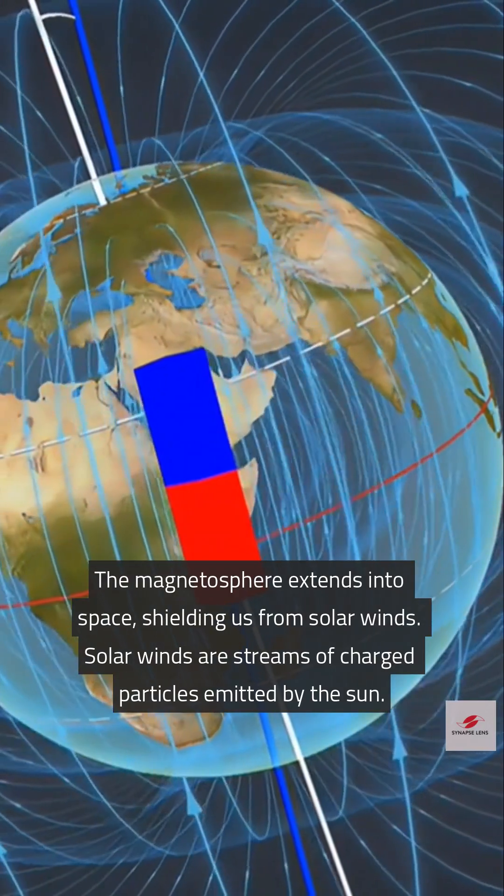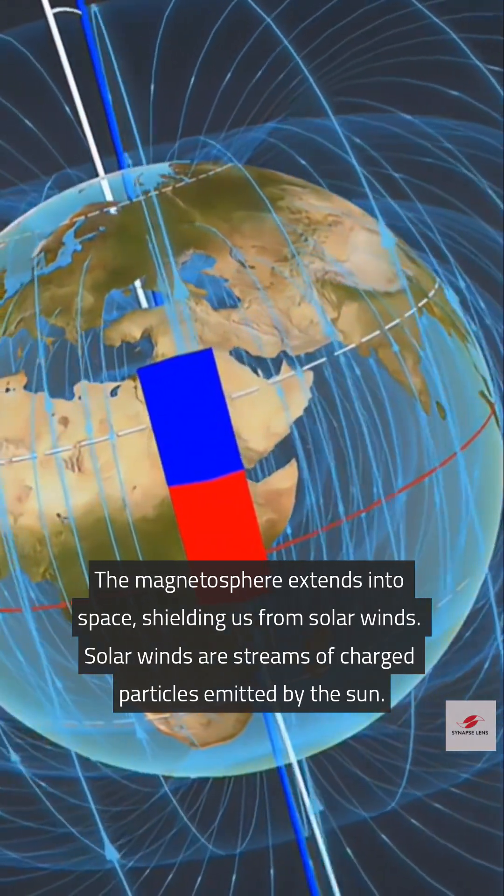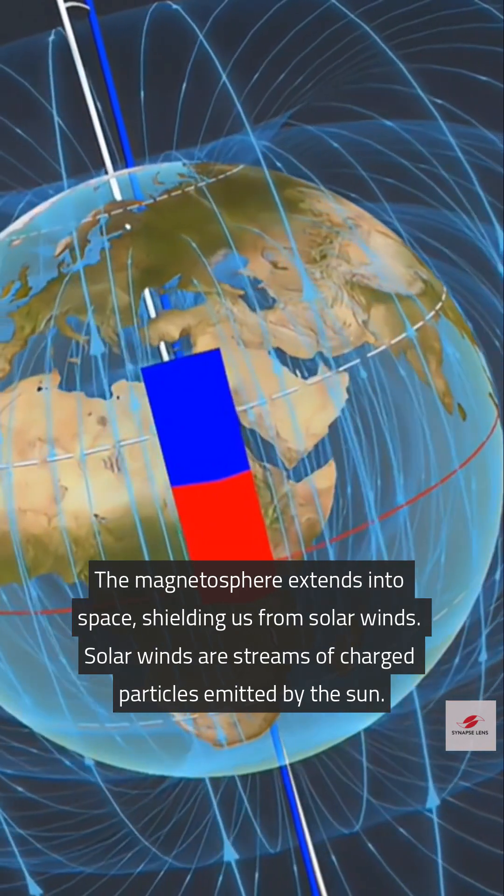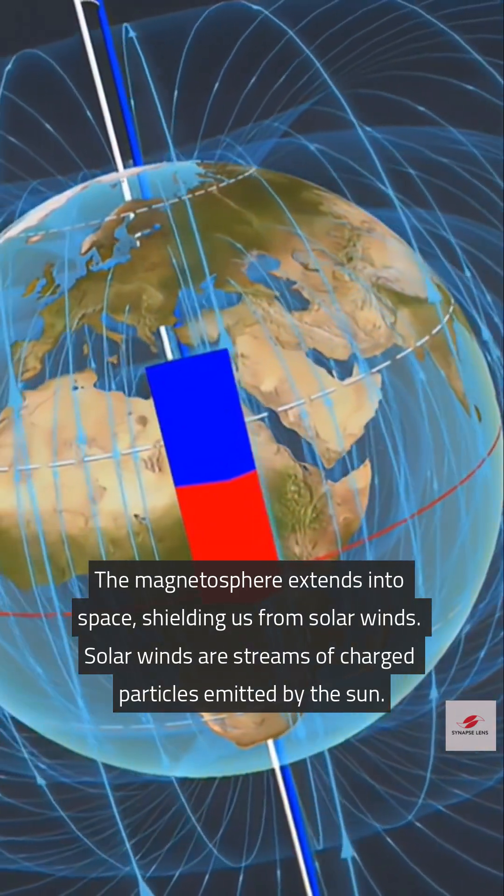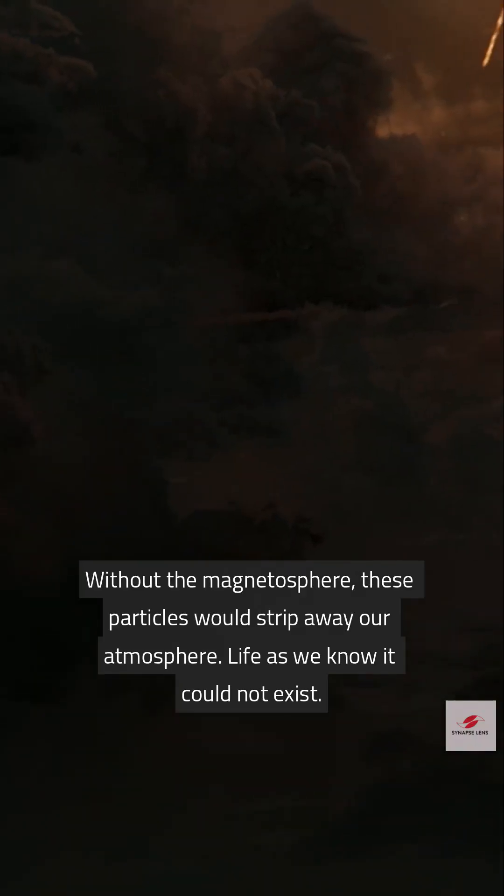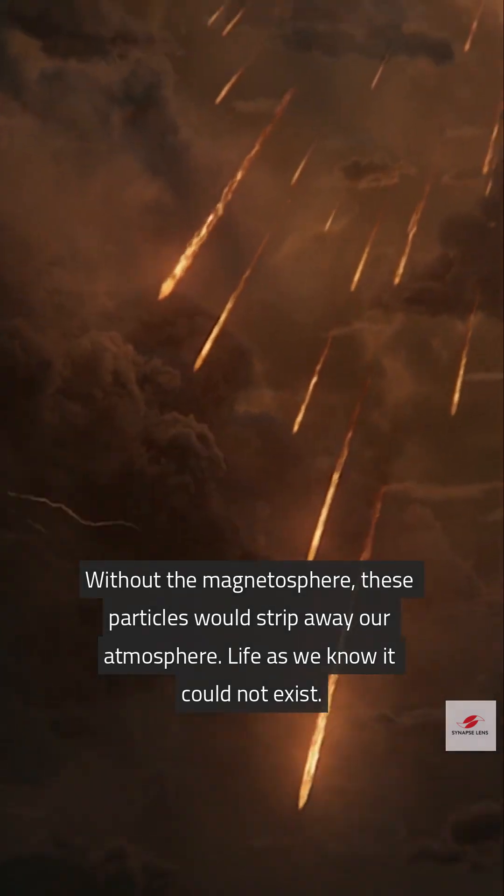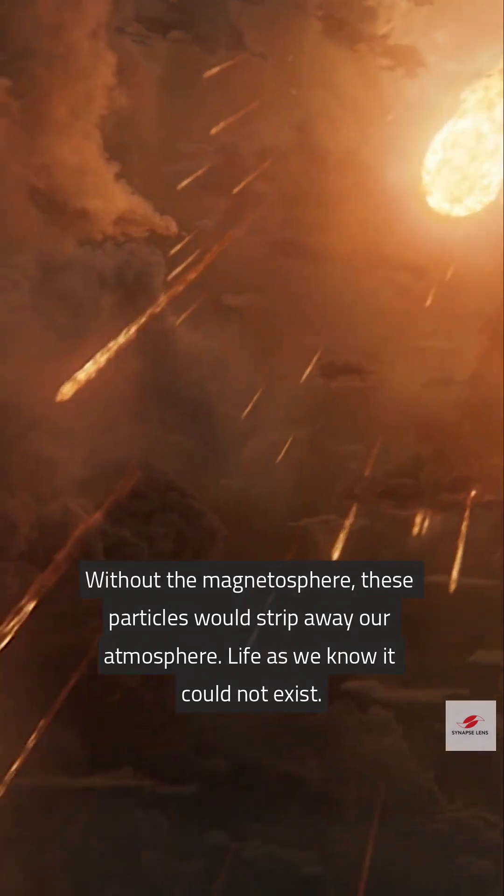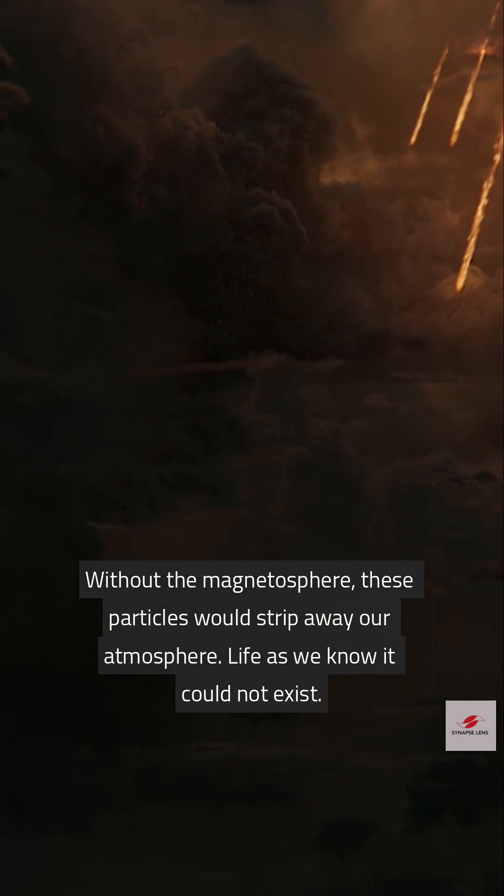The magnetosphere extends into space, shielding us from solar winds. Solar winds are streams of charged particles emitted by the sun. Without the magnetosphere, these particles would strip away our atmosphere. Life as we know it could not exist.